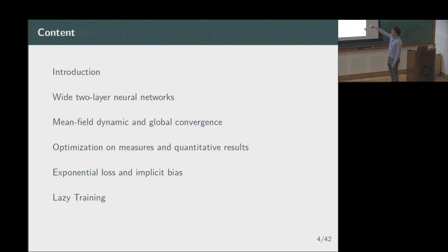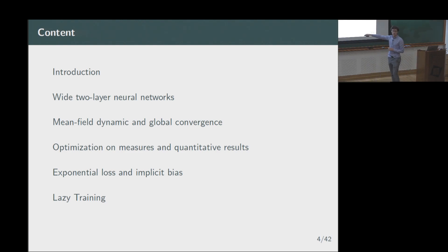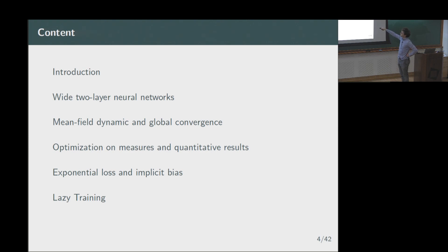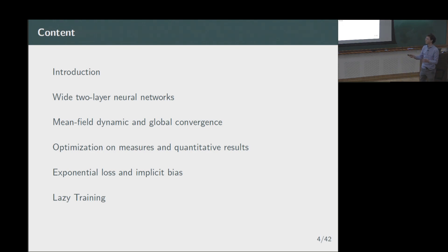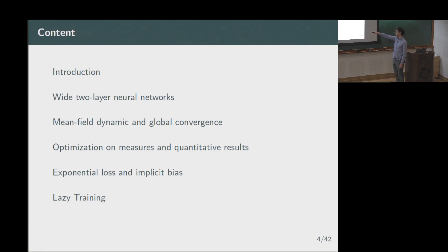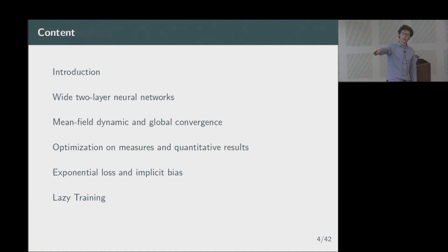In the next section I will talk about why two-layer neural networks are interesting, present what this object is, and give some of its statistical properties. Then we will discuss optimization properties. We will study the mean field dynamics of infinitely wide two-layer neural networks and how they behave when trained. I will present results on how to solve optimization problems on the space of measures, taking inspiration from how neural networks solve their problems, and then cover the exponential loss and the phenomenon of lazy training.